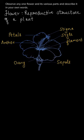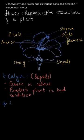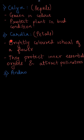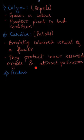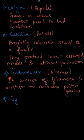We will go through each part one by one. First is the calyx, which consists of sepals. These are green in color and protect the plant in bud condition. Second is the corolla, which consists of petals. These are brightly colored parts of the flower and they protect the inner essential organs and attract pollinators.